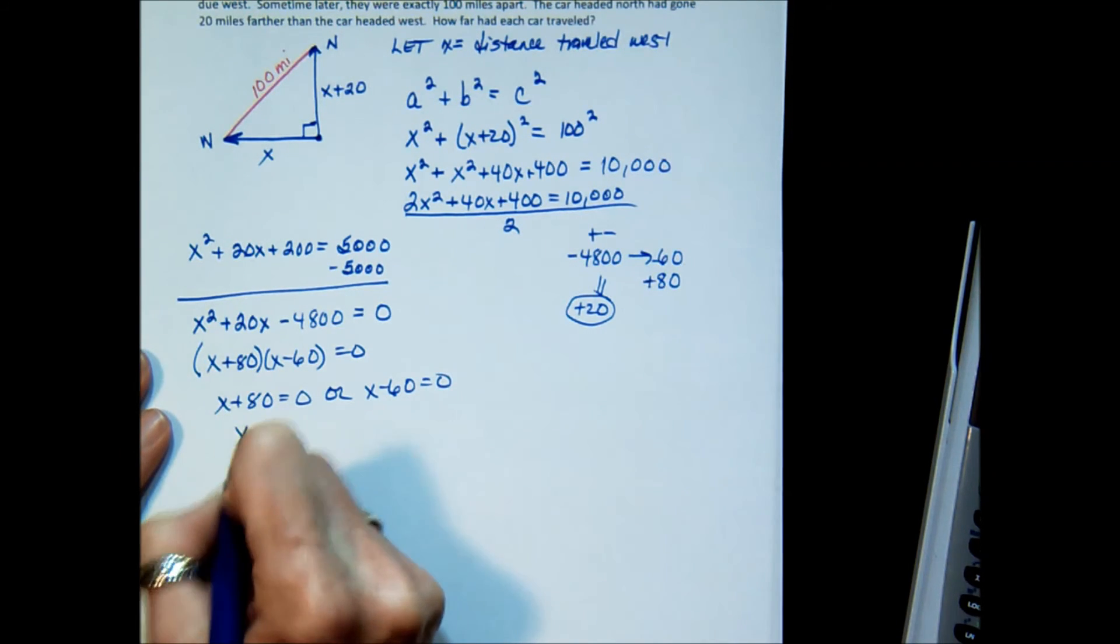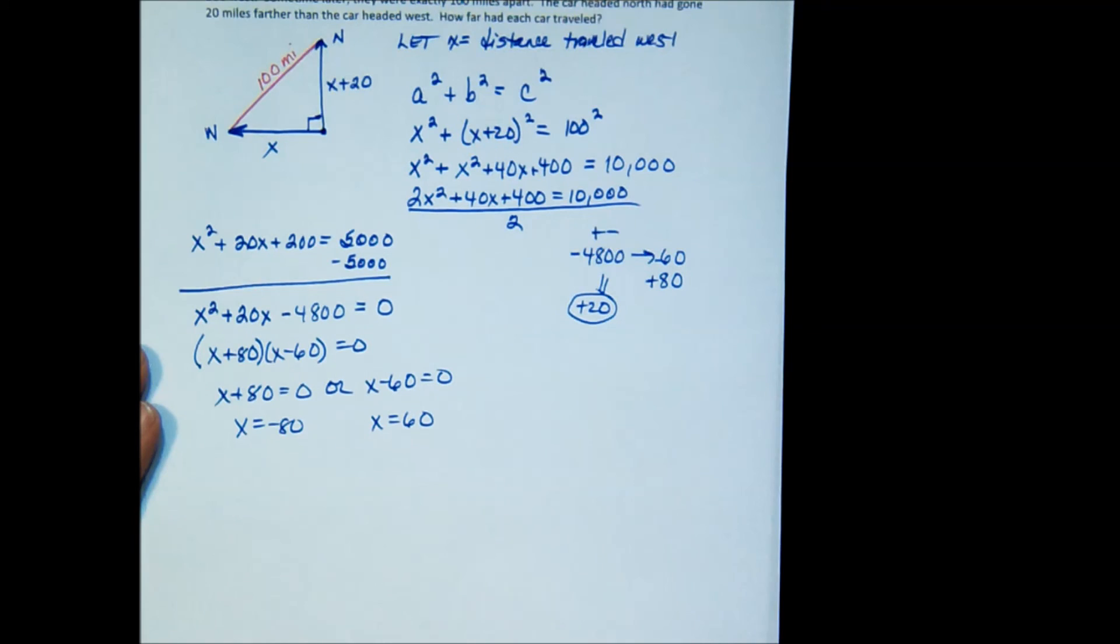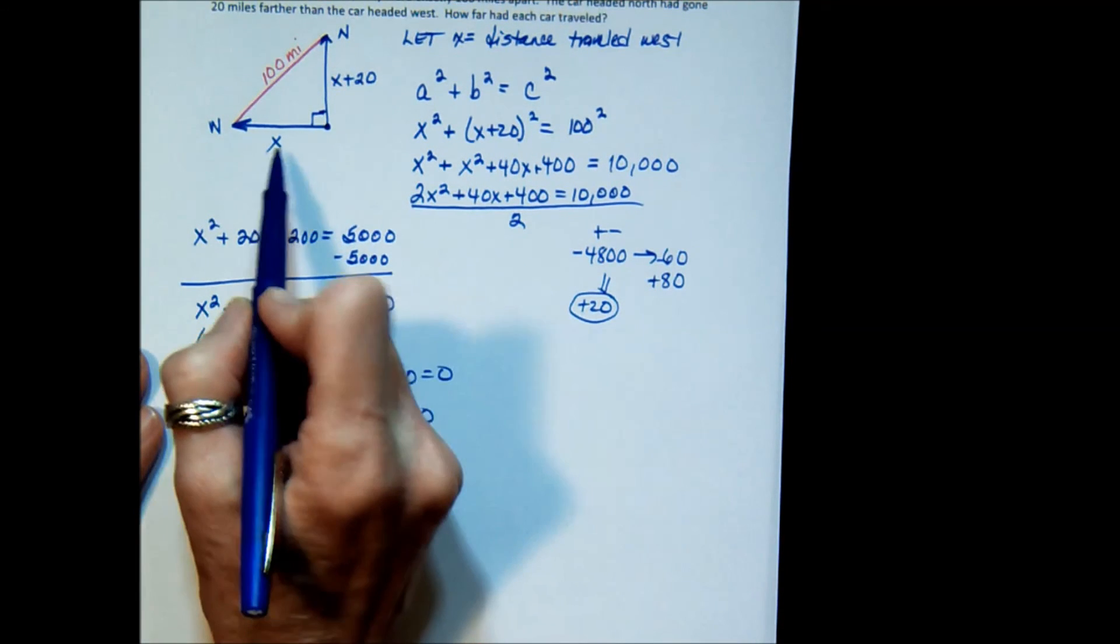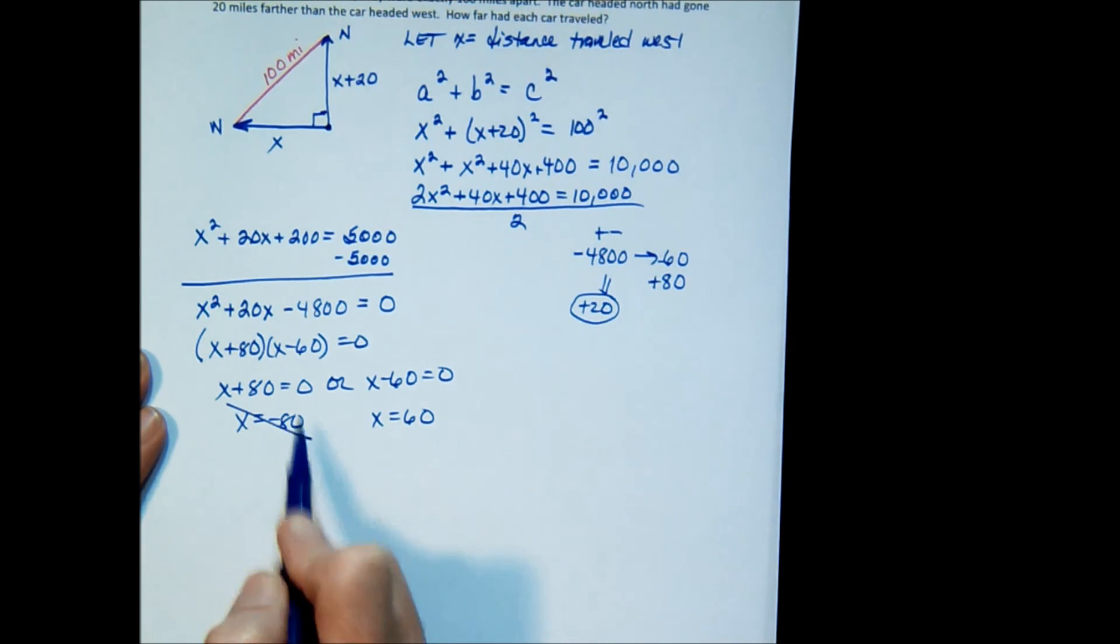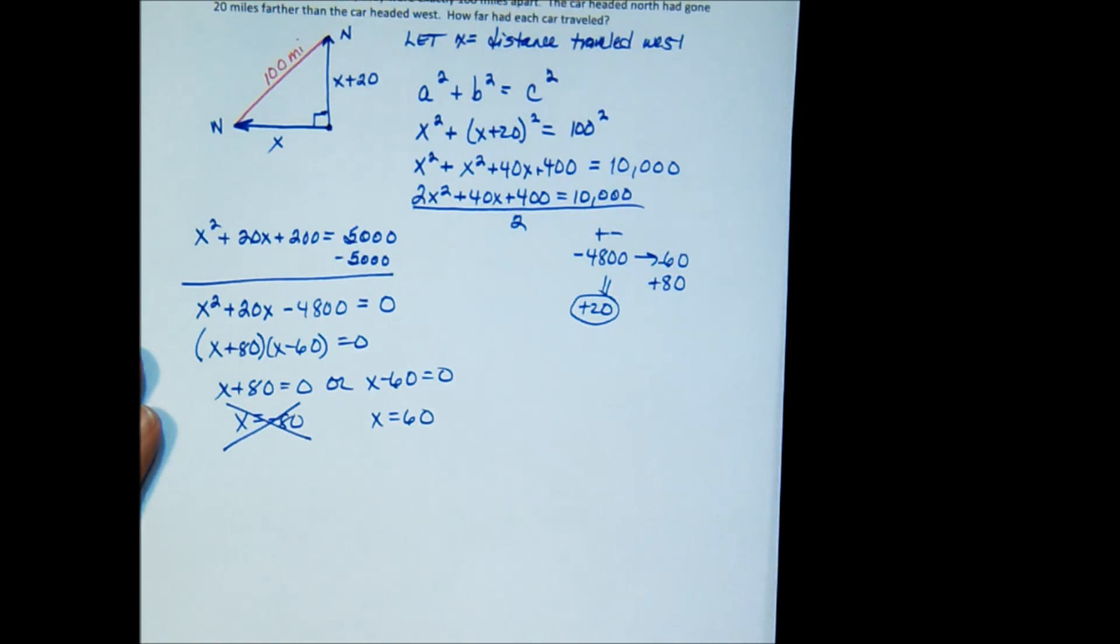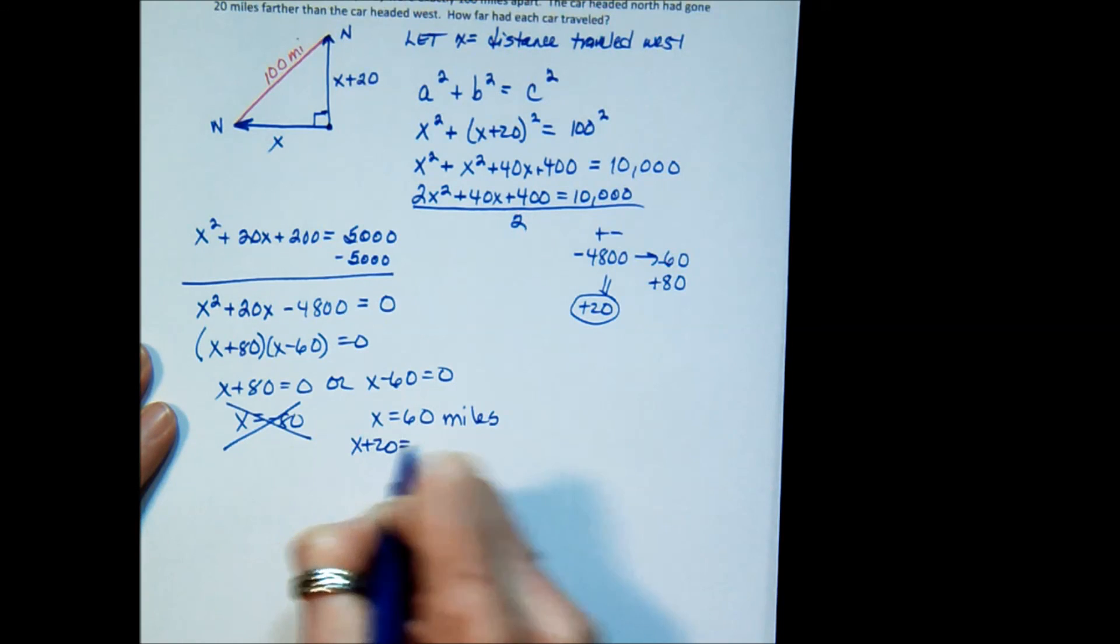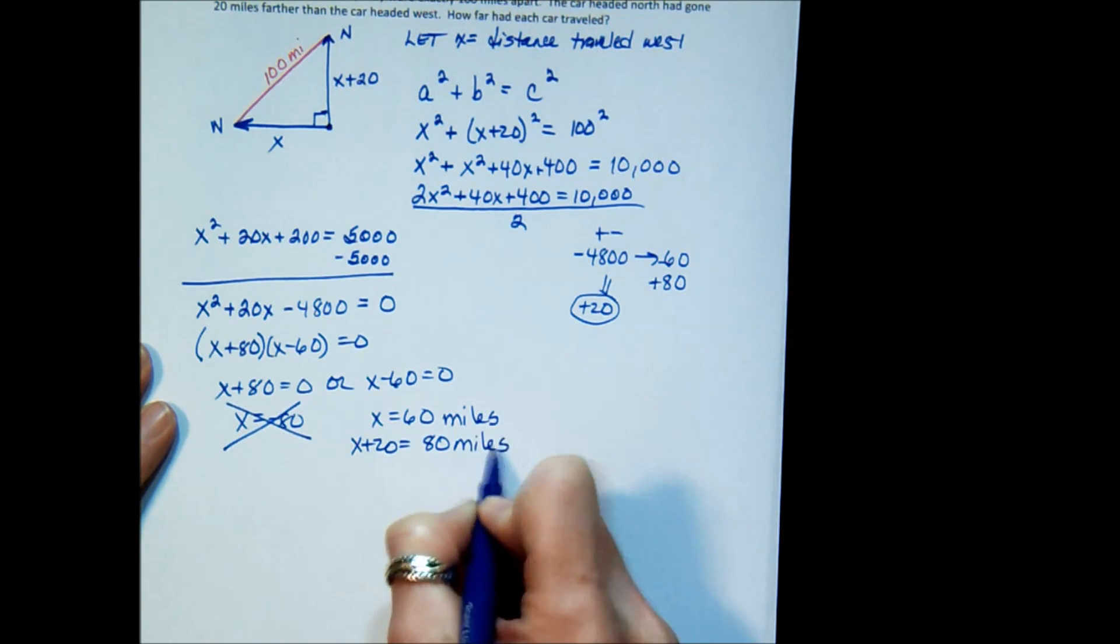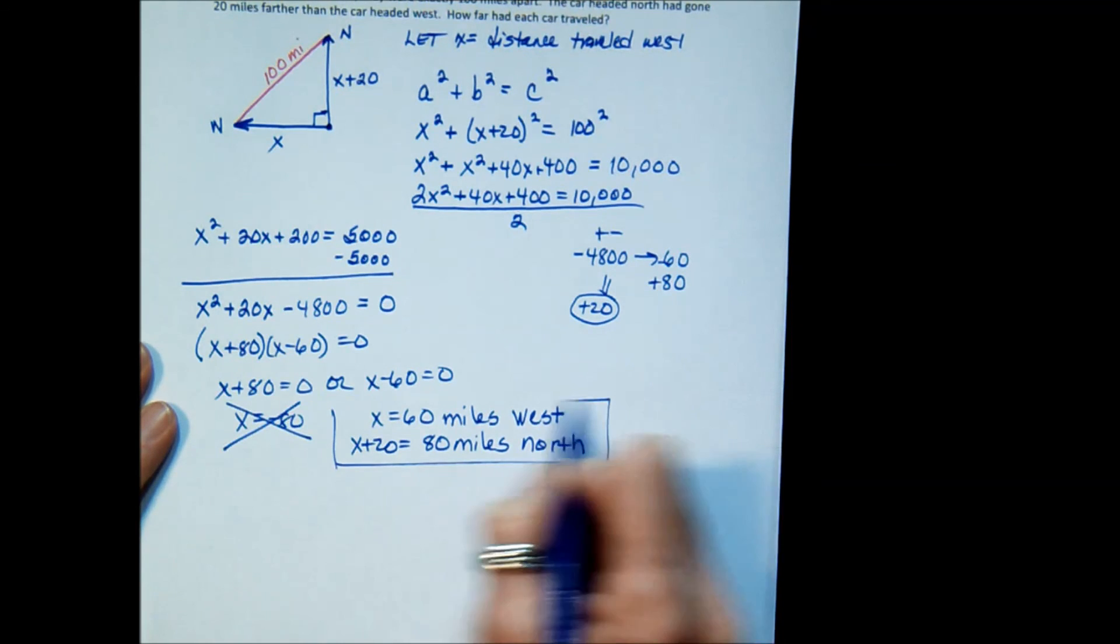x equals negative 80 or x equals 60. Now I can only get one answer that's going to make sense here. If x represents a distance, can it be negative 80 miles? We discard that. Even though the algebra is correct and it works in the equation, it makes no sense in the context of this problem. So I know that x is 60 miles and x plus 20 is 80 miles. So my car heading west went 60 miles and my car heading north went 80 miles using the Pythagorean theorem.